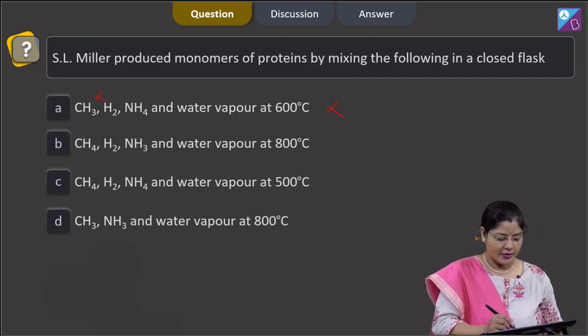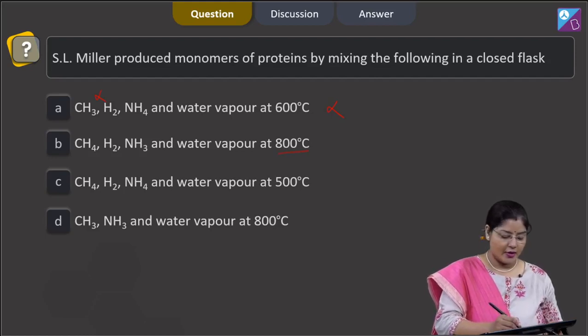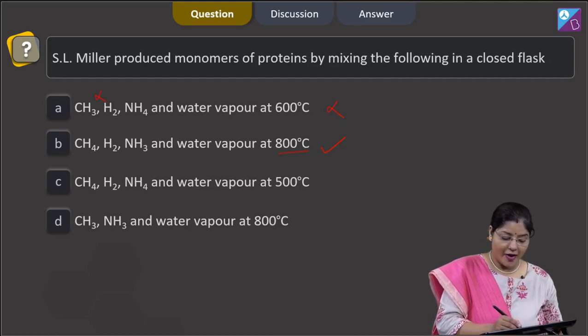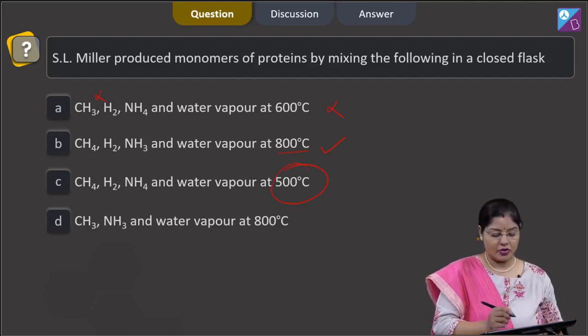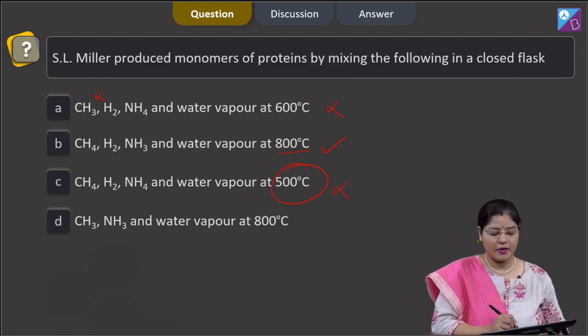Second option: CH4, that is methane, hydrogen, NH3, that is ammonia, and water vapor at 800 degrees centigrade. This is correct. Third option: CH4, H2, NH4, and water vapor at 500 degrees centigrade. Here temperature given is incorrect; temperature was 800 degrees centigrade.